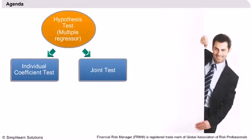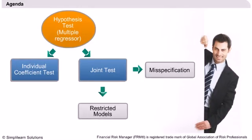In the second part, we will jointly test if any one of the coefficients is making a significant impact on the value of the dependent variable. Finally, we will learn briefly about restricted models and misspecification that can occur in the model.